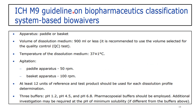ICH M9 also provides standard dissolution conditions for drug products containing BCS class 1 or 3 drug substances. The media volume is 900 ml or less per ICH M9 (500 ml per US FDA guidance), with the remaining parameters being similar. Dissolution is performed on 12 units using three buffers: pH 1.2, pH 4.5, and pH 6.8.